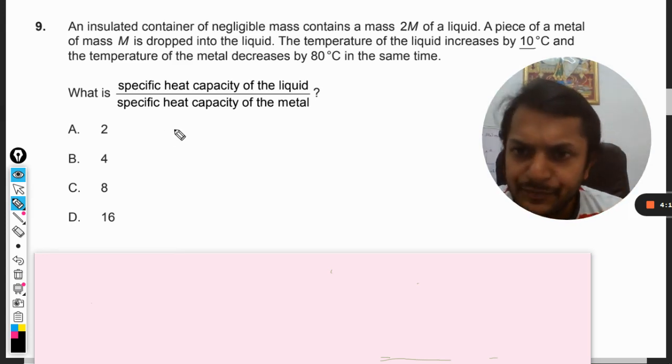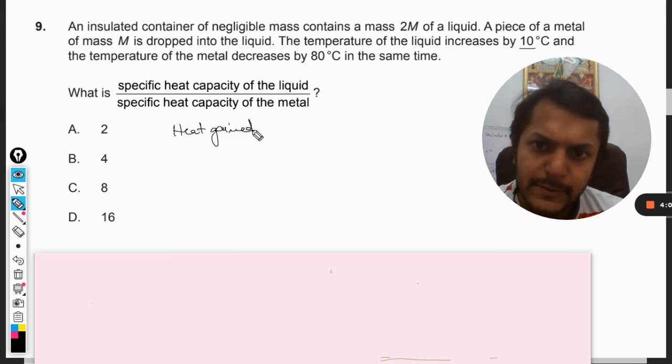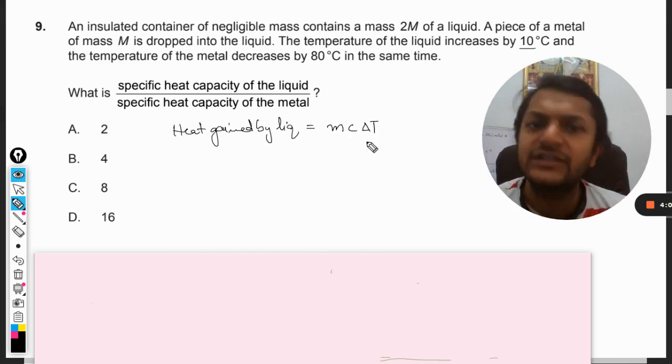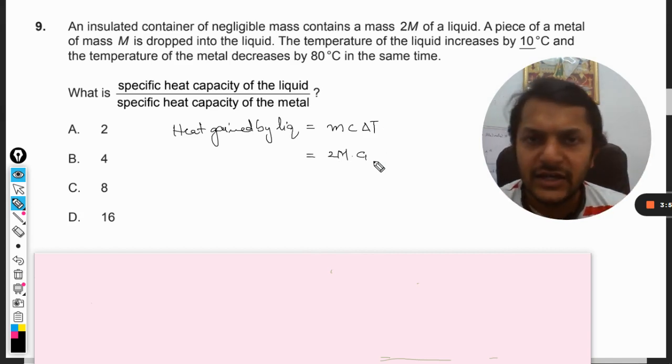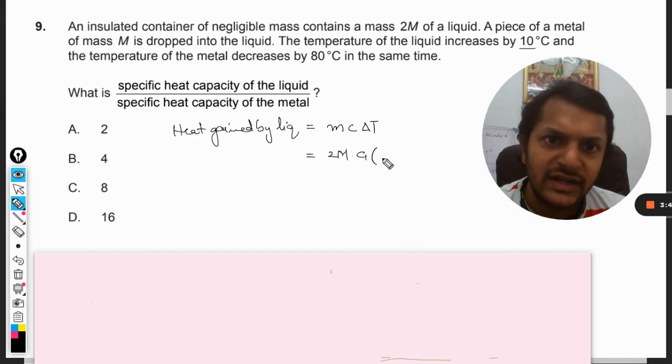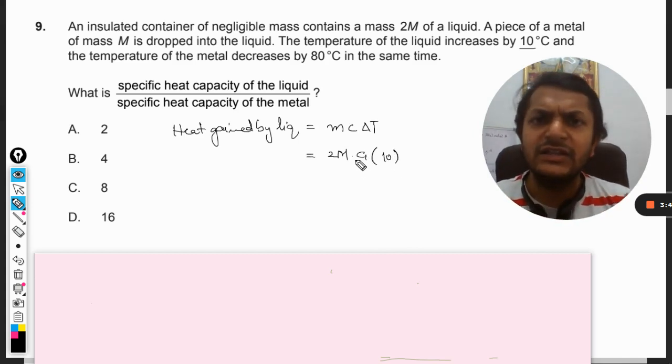Heat gained by liquid will be MC delta T. Now this is the general formula I am writing. So what is the mass of the liquid? 2M. And let us call it C1, the specific heat capacity for liquid. And what is delta T? It increases by 10 degrees, so we are concerned only with the magnitude, not with increase or decrease.